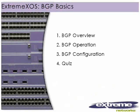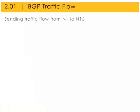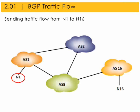The next section is BGP operation. Let's look at what it takes to get Internet traffic from one network to another. To get Internet traffic from Network 1 to Network 16, the following must occur.